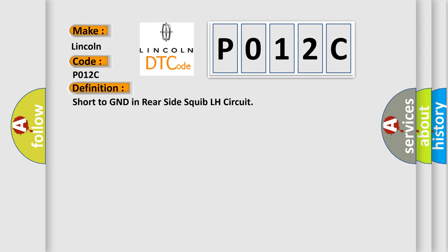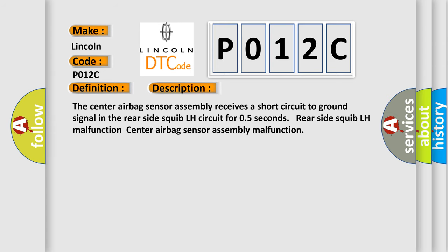And now this is a short description of this DTC code. The center airbag sensor assembly receives a short circuit to ground signal in the rear-side squib LH circuit for 0.5 seconds. Rear-side squib LH malfunction. Center airbag sensor assembly malfunction.